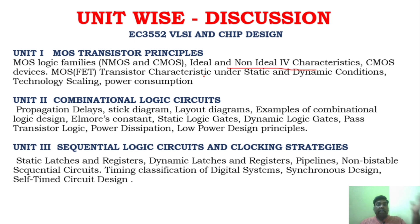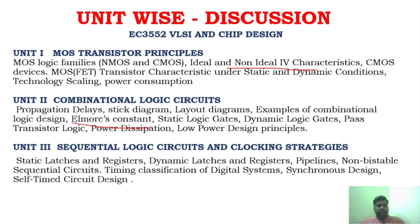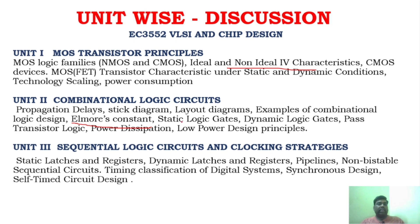Unit 2 is one of the combinational logic circuits topics. Boolean algebra is also covered in unit 2. If you have example problems on CMOS and Boolean algebra, all those problems will be very useful. In unit 2, Elmore's model is very important, as well as stick diagram, and power dissipation — these are all the most important areas.